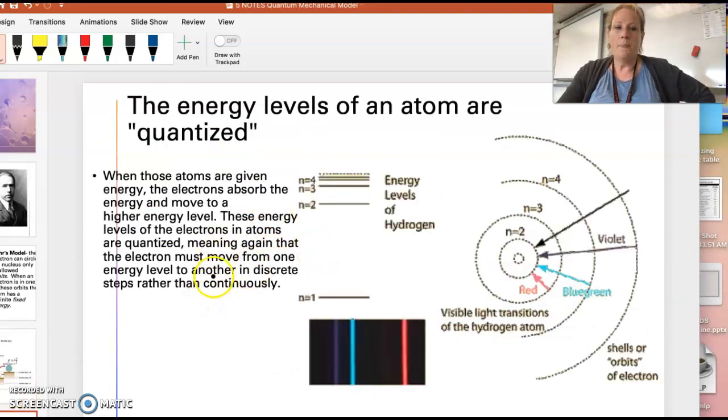So when atoms are given energy, they absorb that energy, and they go to a higher energy level. And we say that this is quantized, which means that the electron can go from one level to another. But it cannot go in a continuous step.